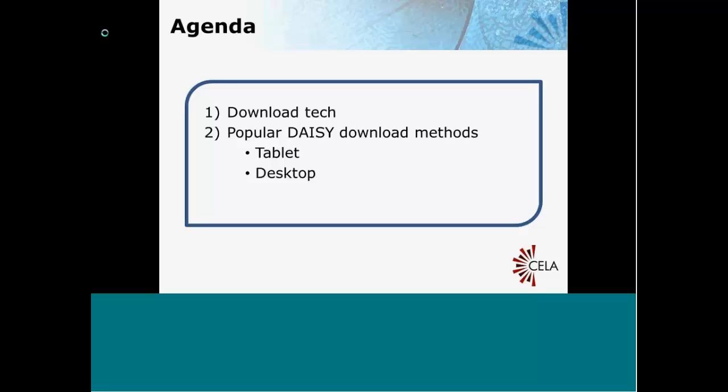Just getting started here for my portion, I'm going to be talking a little bit about the kinds of technologies that are available when you're trying to download a book. Then I'm going to talk about two popular download methods for DAISY books. We're going to look at tablets and desktop computers.